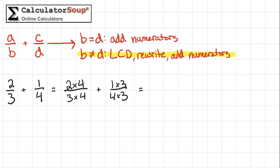2 times 4 is 8, and 3 times 4 is 12. 1 times 3 is 3, and 4 times 3 is 12, so our new equation is 8/12 plus 3/12. Now that the denominators are the same, let's add the numerators together to get 11 and place that result over the common denominator 12. Our answer is 11 twelfths.